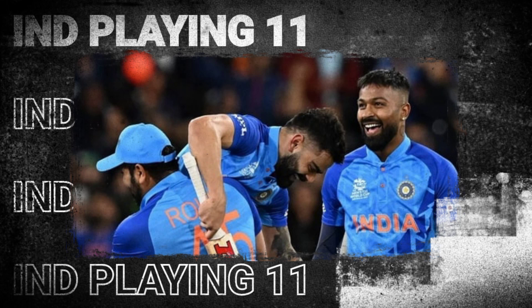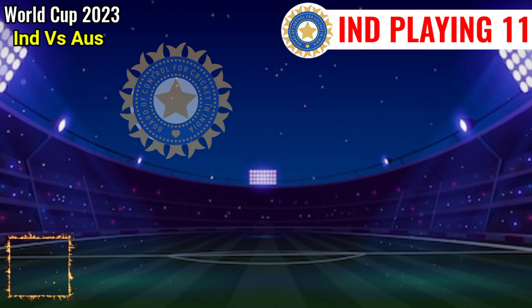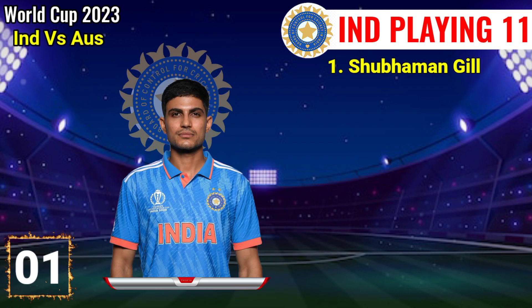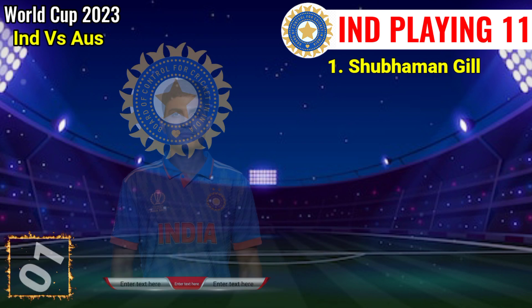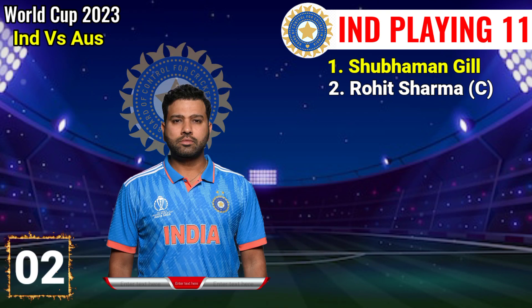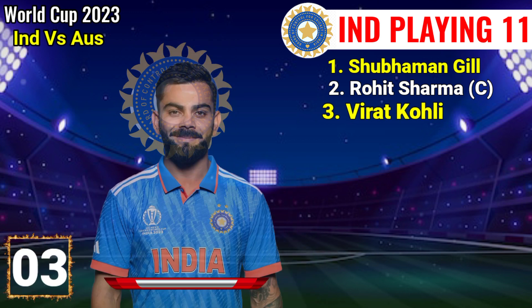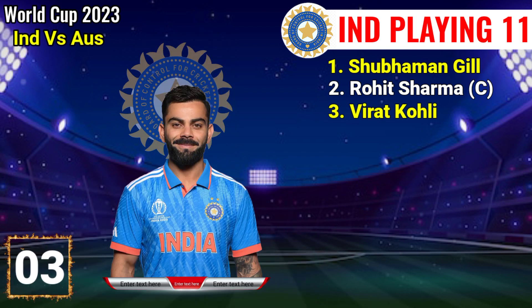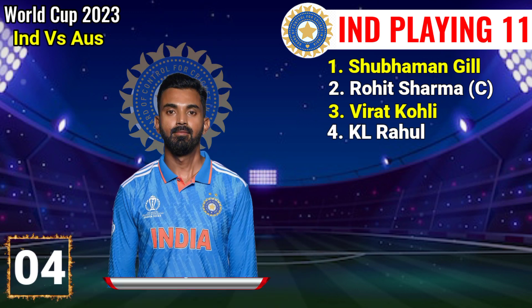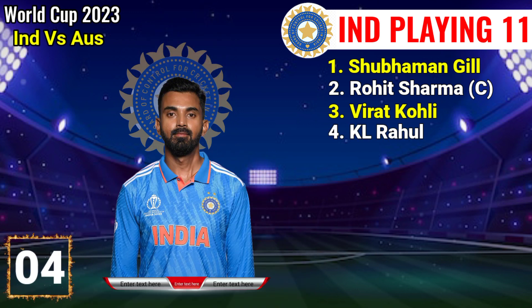Team India final playing 11. Number 1: Subman Gil, right hand batsman. Number 2: Rohit Sharma, right hand batsman and captain. Number 3: Virat Kohli, right hand batsman. Number 4: KL Rahul, right hand batsman and wicketkeeper.